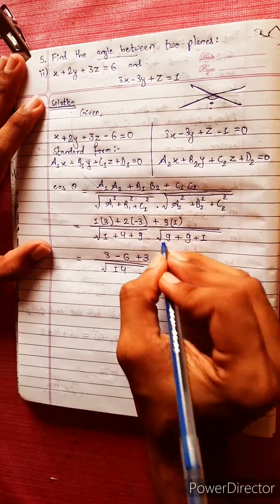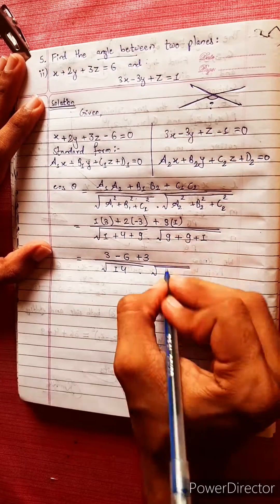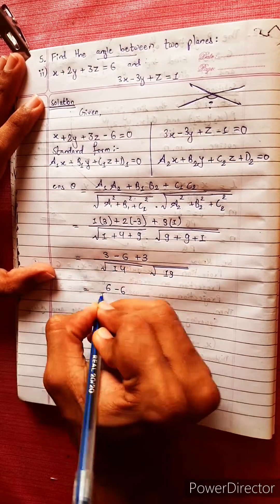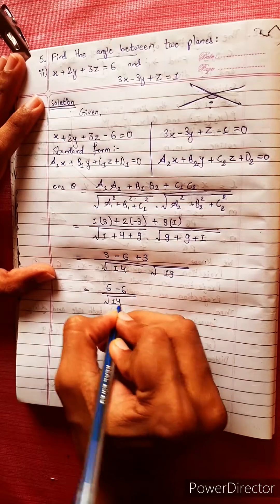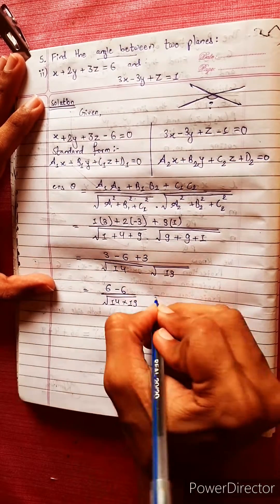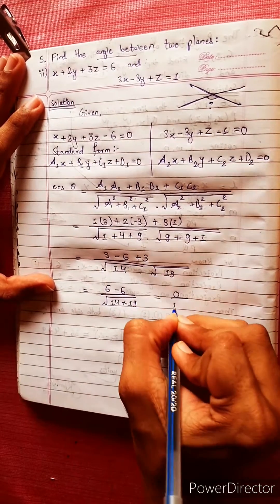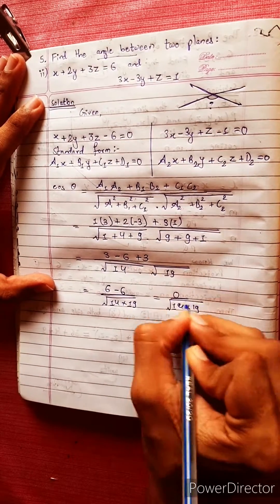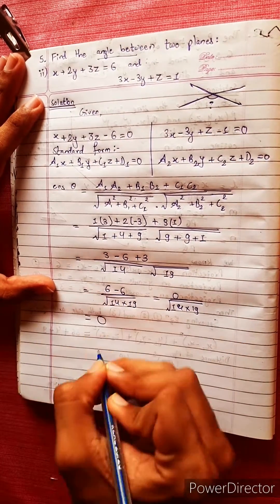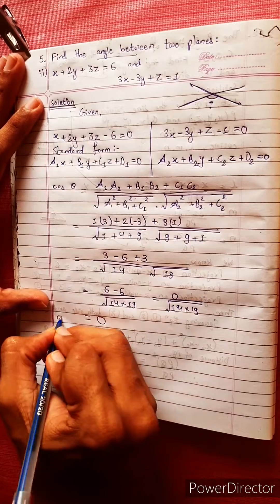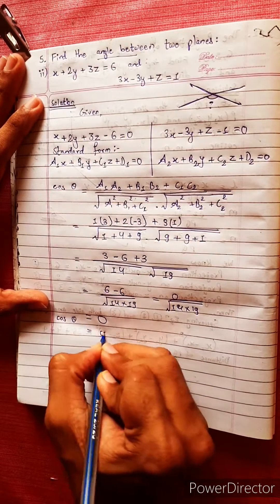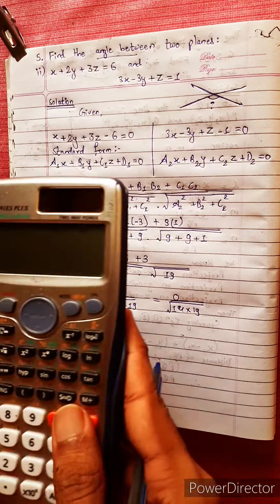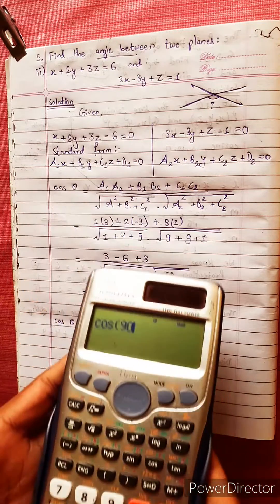Multiplying out: the numerator gives 1·3 plus 2·(minus 3) plus 3·1, which is 3 minus 6 plus 3 equals 0. Dividing by the denominator, we get 0 over 19, which equals 0. Therefore cos theta equals 0, which corresponds to cos 90 degrees.